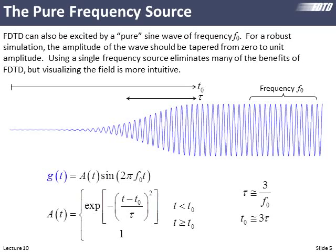Here is what our source looks like over the duration of the simulation — it starts at zero, it's always a pure sine, but we put a Gaussian envelope on top of it to ease into the source. The source g(t) has some amplitude envelope times the sine wave 2πft. The sine term produces the oscillation; the slow envelope is the Gaussian, defined to be a Gaussian for the first half but staying at one once it reaches its maximum. This is how we calculate our source as a function of time for a sine wave.